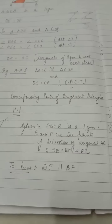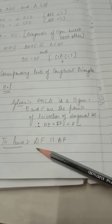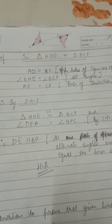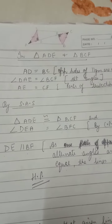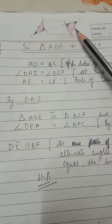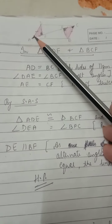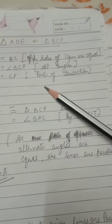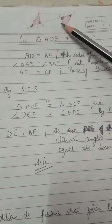Given: parallelogram ABCD with trisection points E and F on AC. To prove: DE ∥ BF. In triangles ADE and BCF: AD = BC (opposite sides of the parallelogram); angle DAE = angle BCF — these are alternate angles, which you can mark as angle 1 and angle 2; and AE = CF because these are corresponding parts of the trisection.